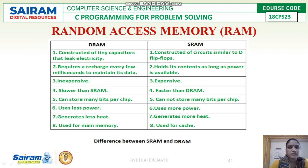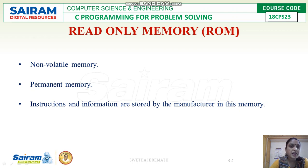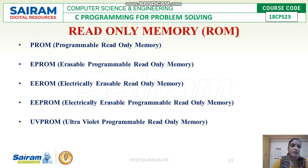Coming to read-only memory, ROM is non-volatile and permanent memory. Instructions and information are stored by manufacturers in this type of memory. The different types of read-only memory are: PROM, EPROM, EEROM, EEPROM, and UV PROM.